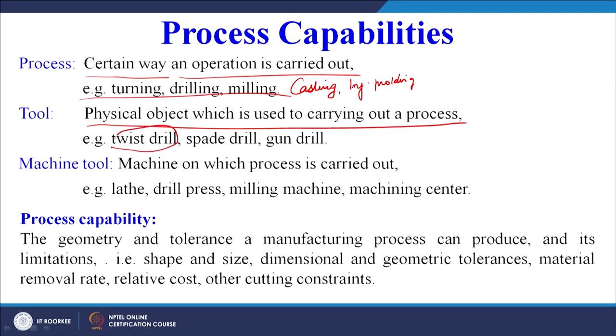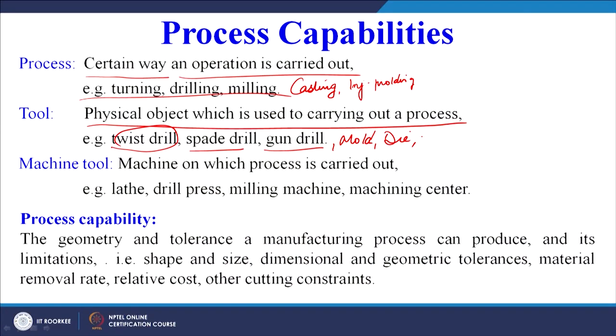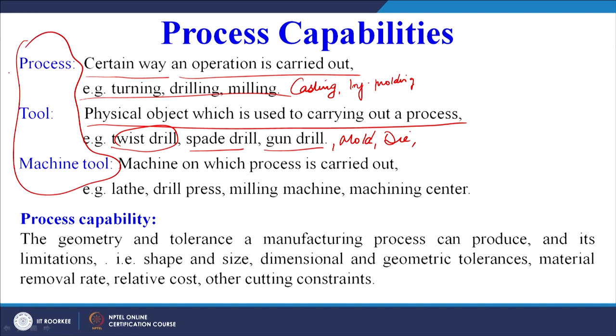What is a machine tool? It is the machine on which the process is carried out — lathe, drill press, milling machine, injection molding machine, compression molding machine, extrusion machine, filament winding machine, or pultrusion machine. Different types of machines provide the relative motion between the tool and the material. Process capability revolves around these three things: the process, the tool, and the machine. Process capability covers the geometry and tolerance a manufacturing process can produce, and its limitations — shape and size, dimensional and geometrical tolerances, and material removal rate. Material removal rate is especially relevant for unconventional machining such as electric discharge machining, ultrasonic machining, and electrochemical machining.